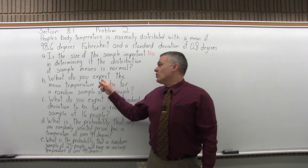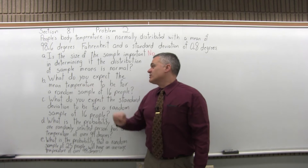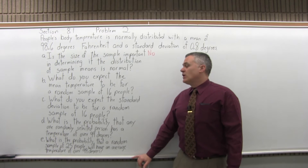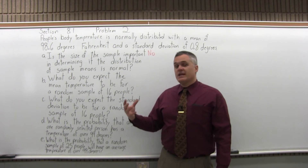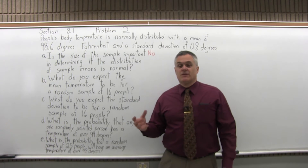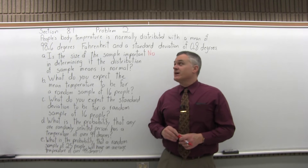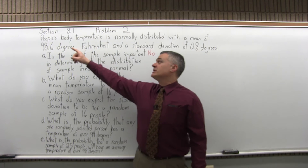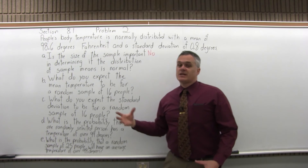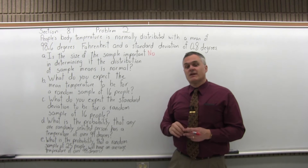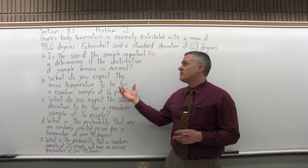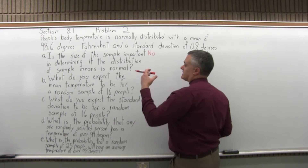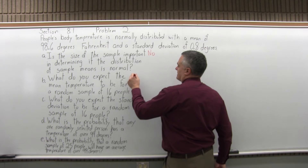Part B asks what you expect the mean temperature to be for a random sample of 16 people. If you take any random sample of 16 people and find their average temperature, it's going to come out the same as the average of the whole population. The whole population has a mean of 98.6, so if you take a sample, you can expect it to have the same mean — 98.6.